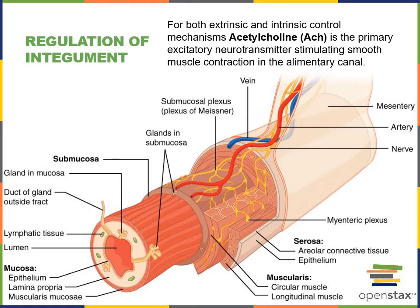Acetylcholine is the primary excitatory neurotransmitter that stimulates both contraction and secretion from the glands in the alimentary canal. Acetylcholine is released by the excitatory neurons of the enteric nervous system to stimulate both contraction and secretion, and is also released by the postganglionic parasympathetic fibers as an extrinsic control mechanism. Acetylcholine released by both extrinsic and intrinsic mechanisms leads to increased contraction of smooth muscle in the muscularis and increased secretion from glands in the submucosa, which produce mucus that lubricates the alimentary canal and carry enzymes important for chemical digestion.